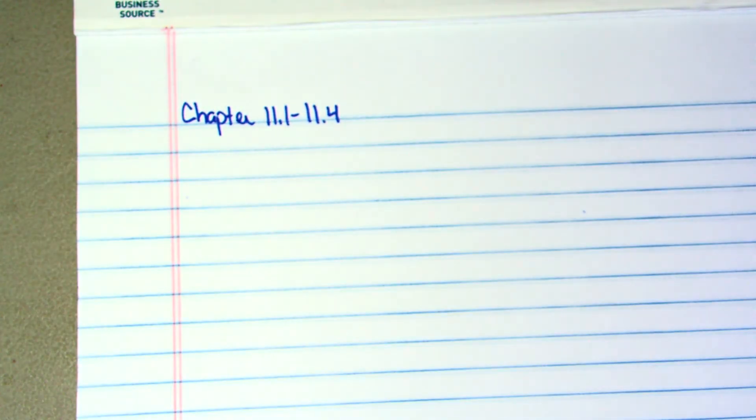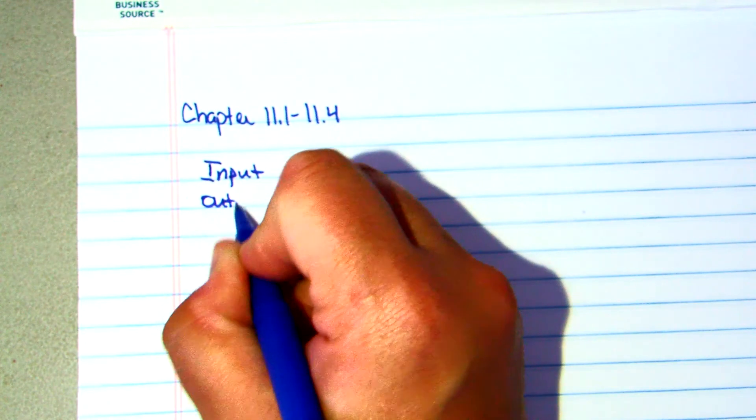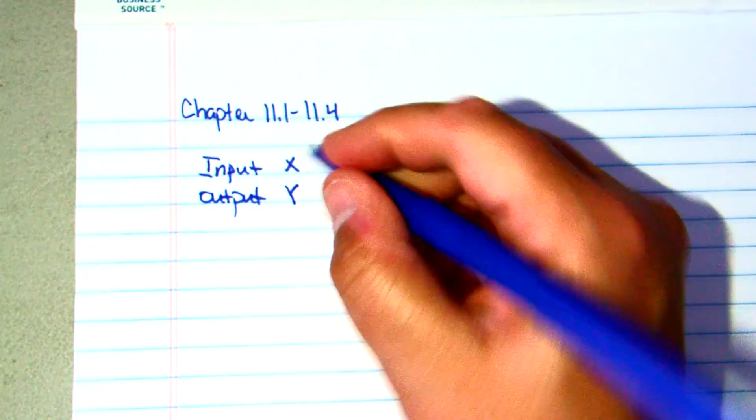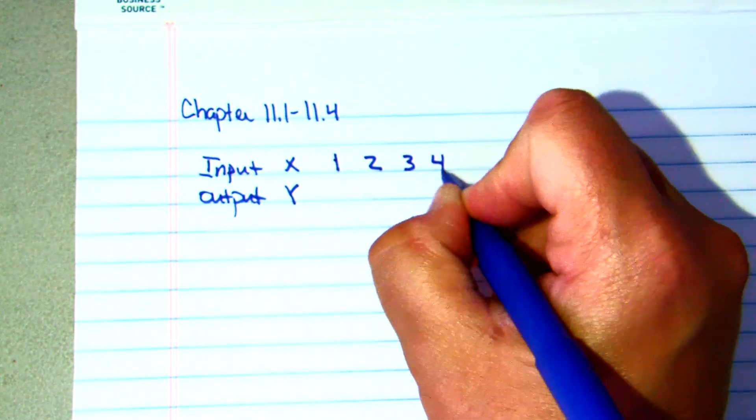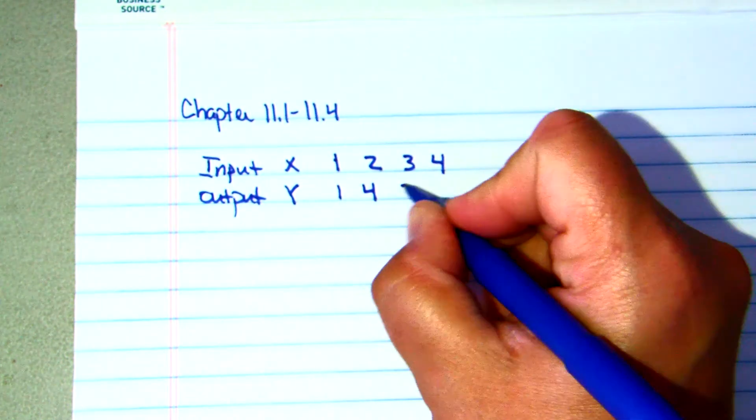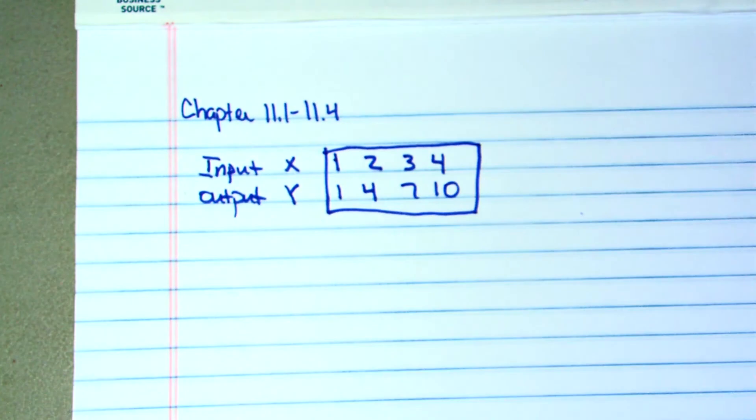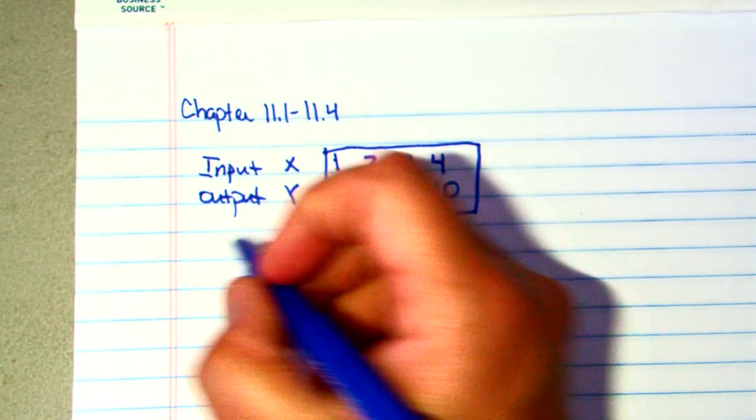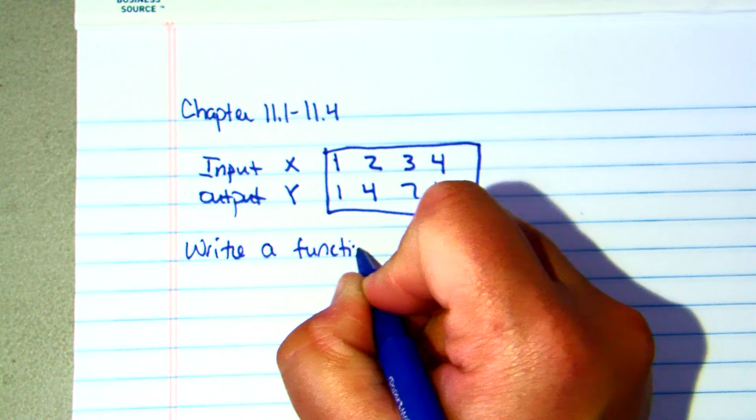So if I gave you some data, if the data was for instance here is the input which if we recall input and output. Input is the same as X. Output is the same as a Y value. I told you that the input data is 1, 2, 3, and 4. The output data or the Y values are 1, 4, 7, and 10. Now on both of these sets of data we want to determine what the relationship is between the X and the Y. The way that we do that would be to write a function rule.